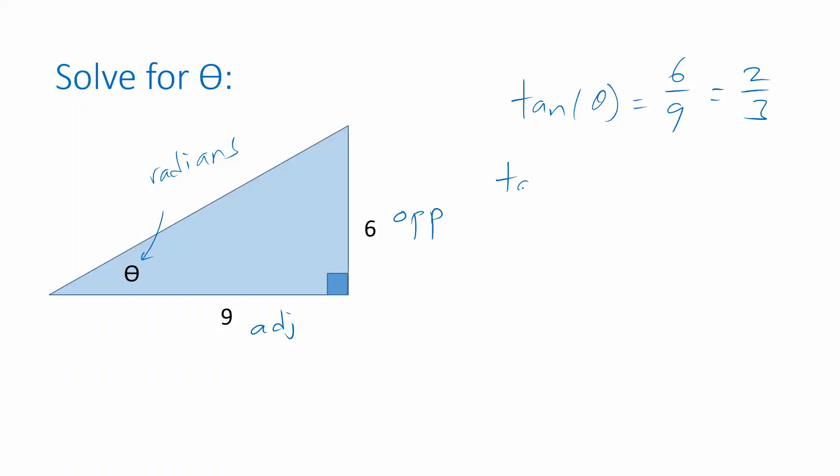I'm going to take the inverse tangent of both sides and get theta equals inverse tangent of 2 thirds. This time I'm working in radians because we didn't have a degree symbol. This is an exact answer, and if we evaluate this on a calculator, making sure the calculator is in radian mode, we get 0.59 radians for an approximation.